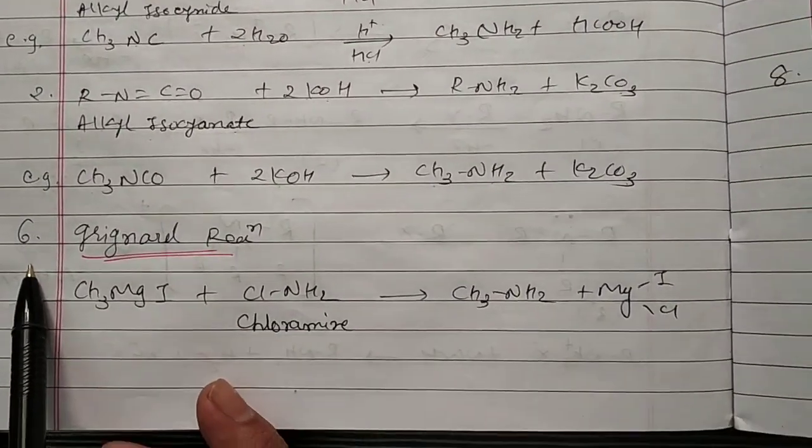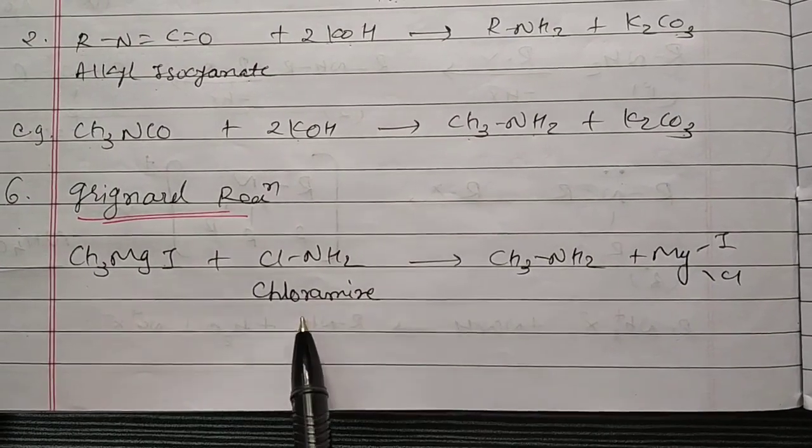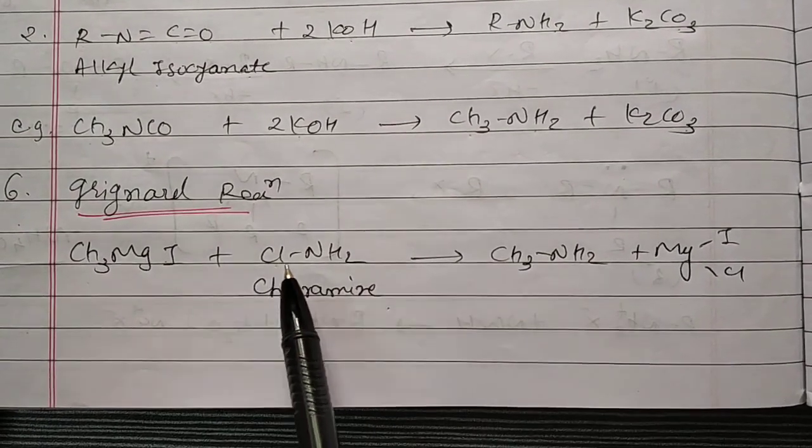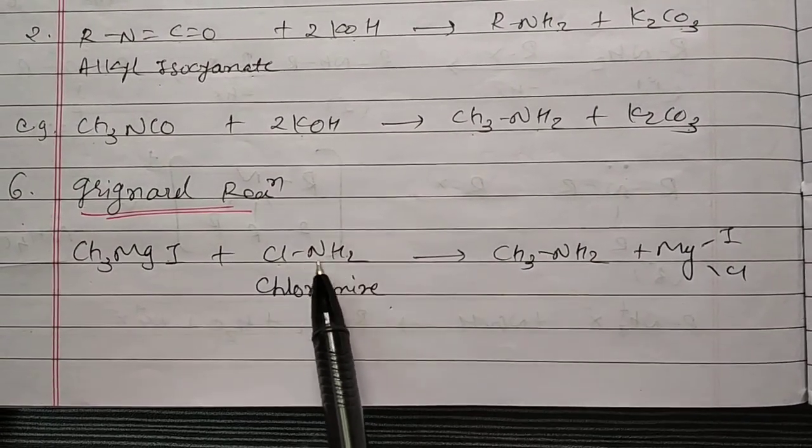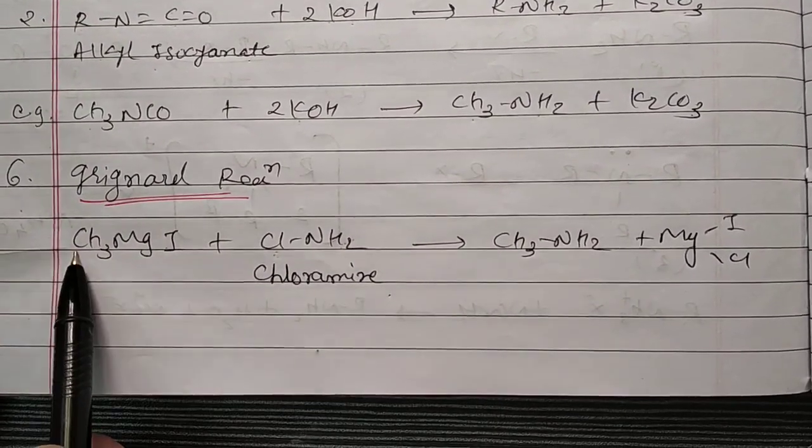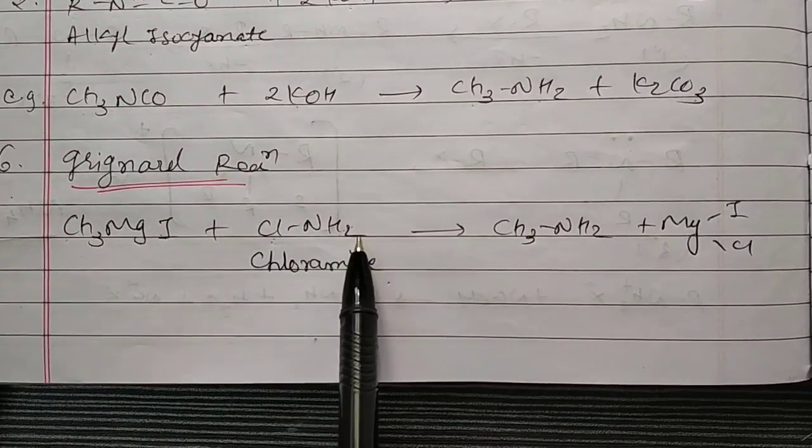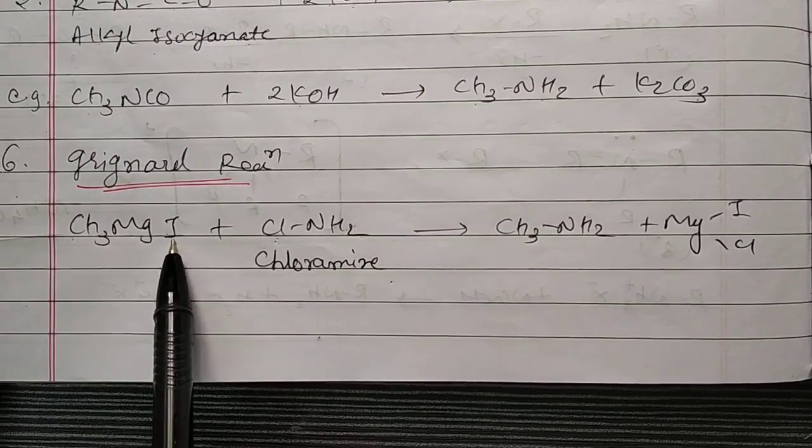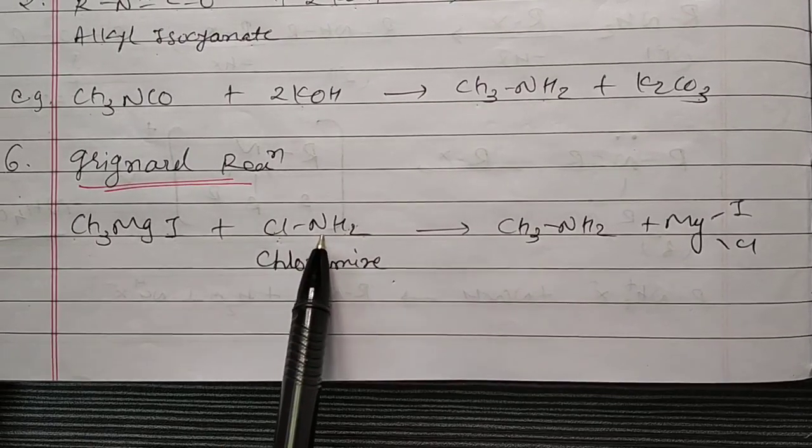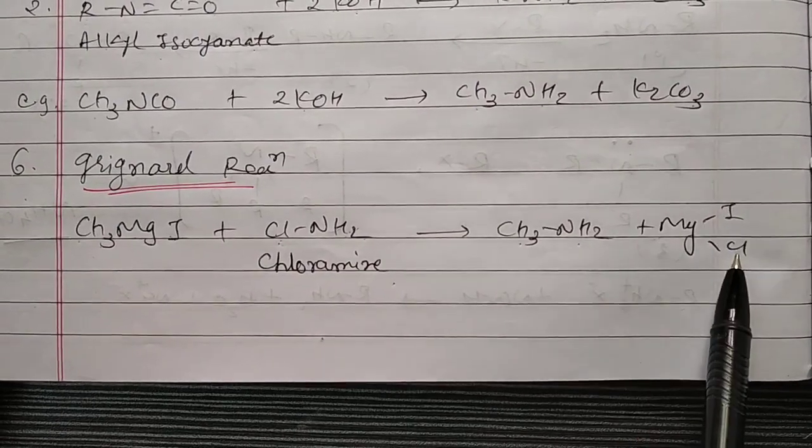Sixth is Grignard reaction, really very easy. When CH3MgI is treated with chloramine, chloramine means Cl-NH2. Ammonia means instead of one Cl. You get Cl-NH2. So CH3MgI, that is Grignard reagent, when treated with Cl-NH2, MgICl is your byproduct and NH2 goes to methyl, you get CH3-NH2 plus MgICl.